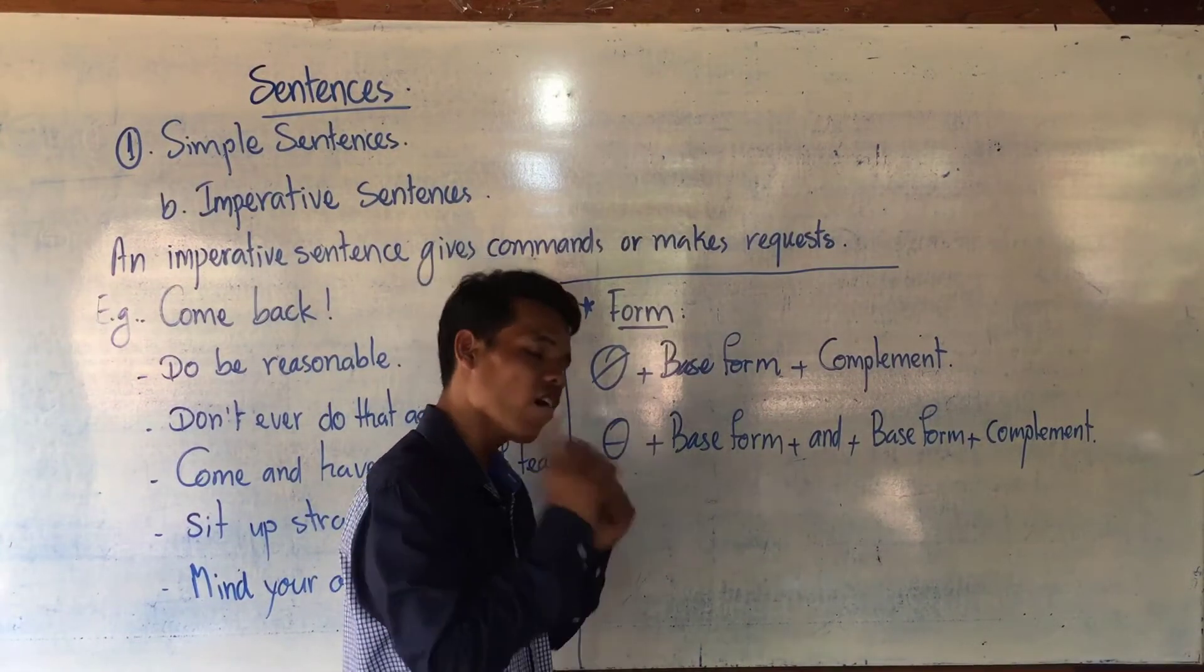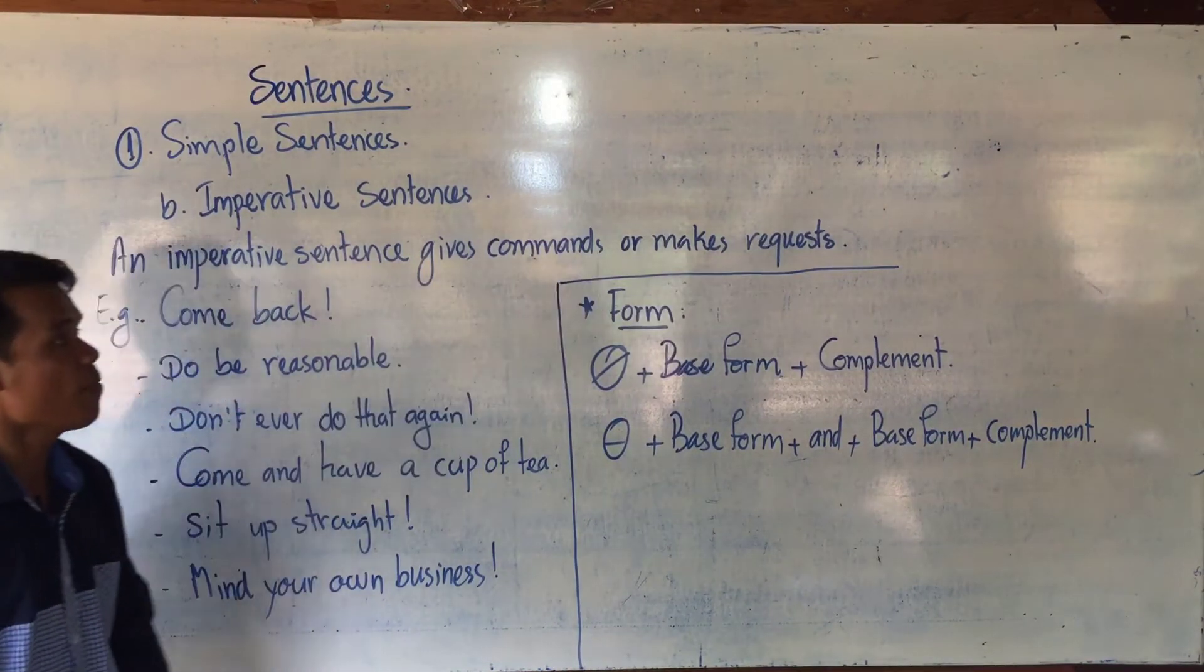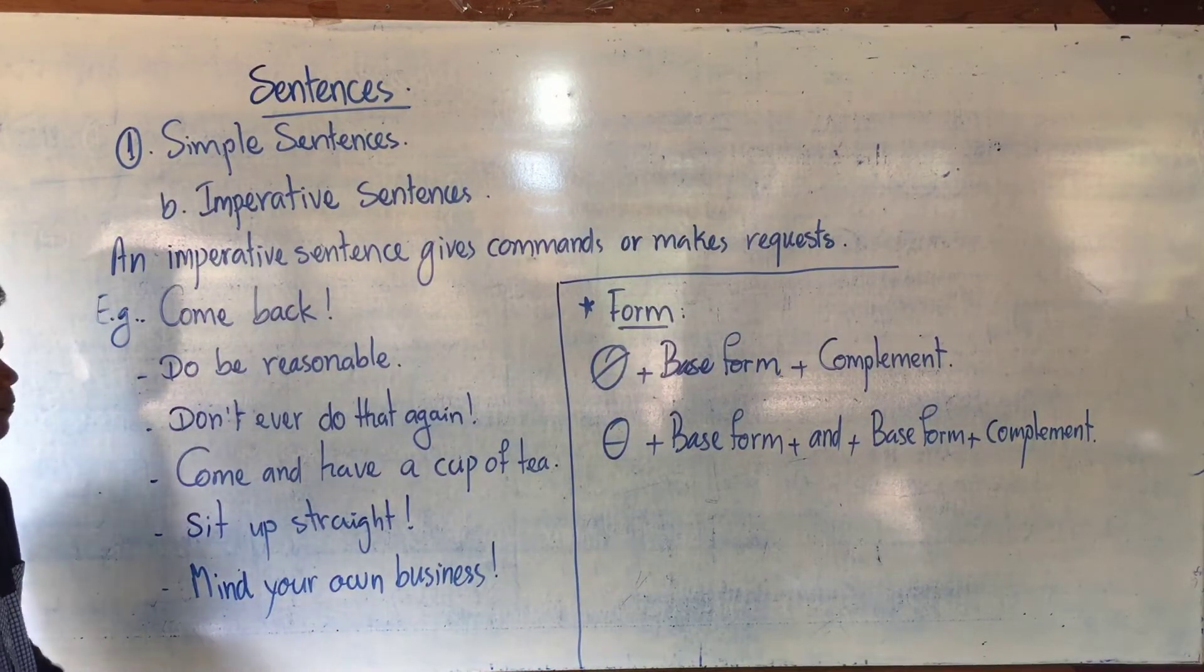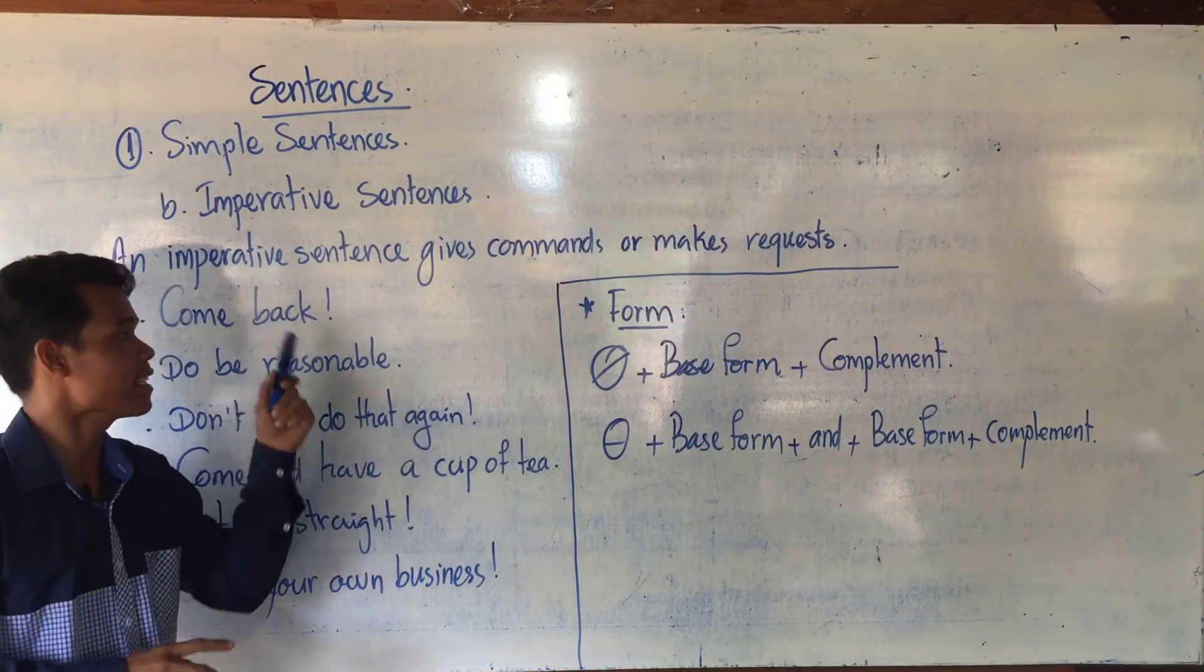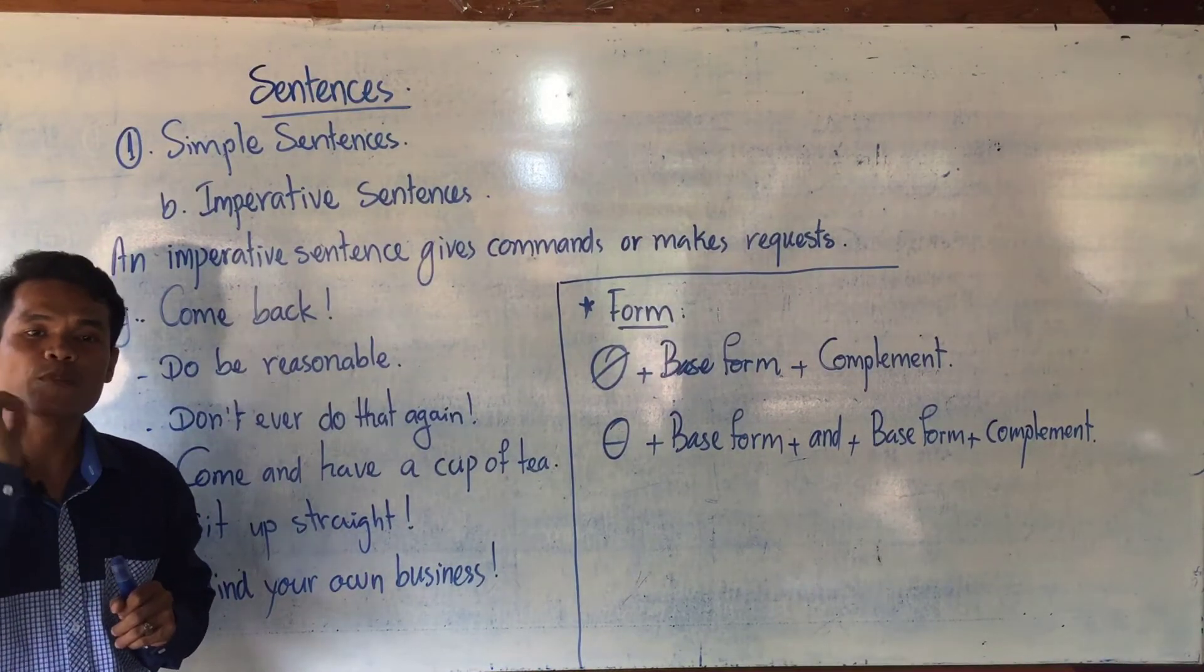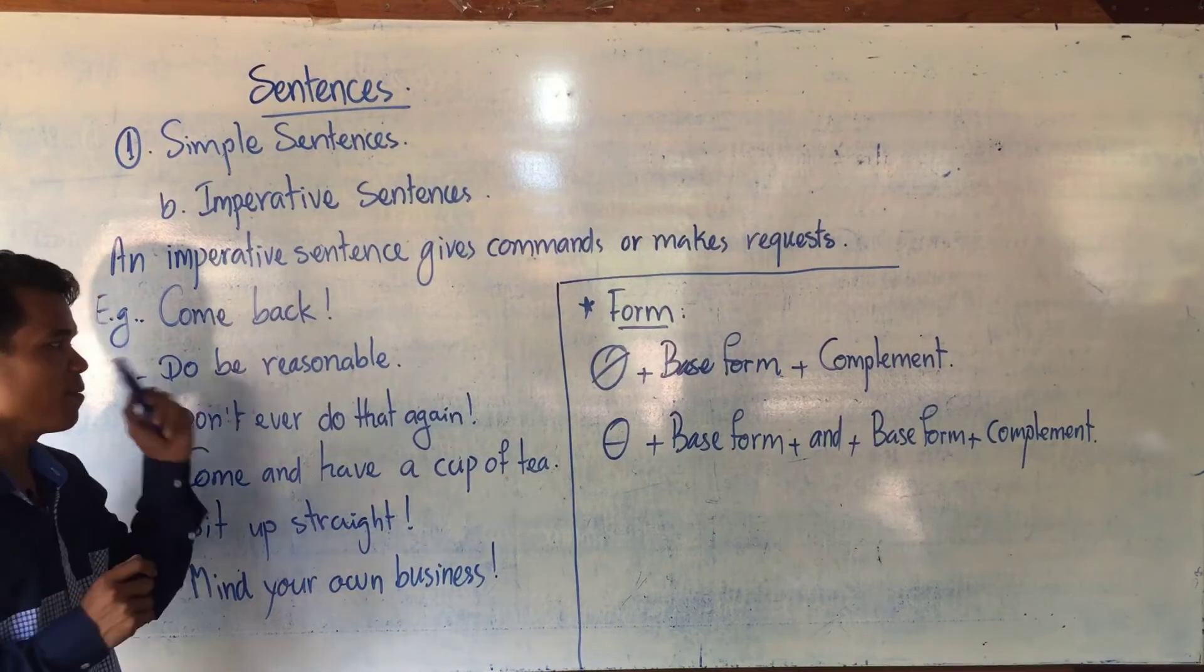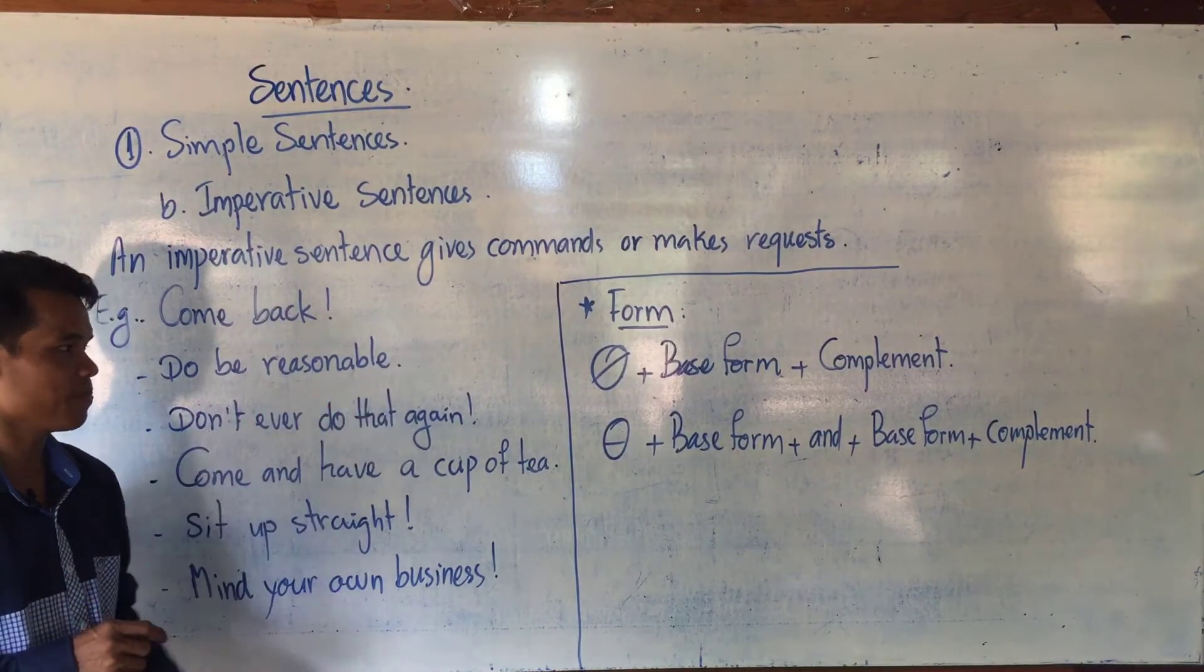Again, imperative sentence refers to a sentence that gives commands or makes requests. When you use imperative sentence it sounds like someone orders somebody to do something. In an imperative sentence we can use two marks: one is the full stop and the other exclamation mark. When do we use exclamation mark? We use an exclamation mark if you want to show that the words are being spoken with great feeling or emotions.